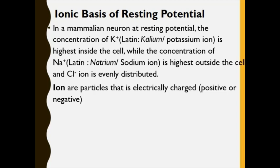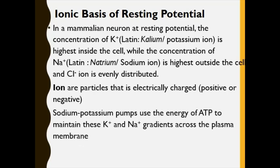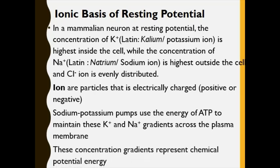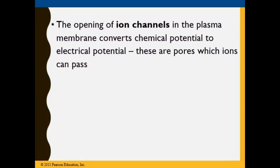Ions are electrically charged particles — they can be positive or negative. Sodium-potassium pumps use the energy of adenosine triphosphate to maintain potassium and sodium gradients across the plasma membrane. This concentration gradient represents chemical potential energy. The opening of ion channels in the plasma membrane converts this chemical potential to electrical potential — the ions pass through these channels.